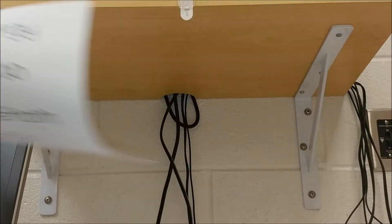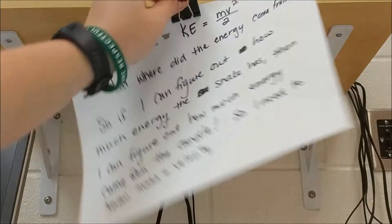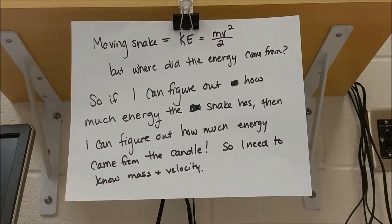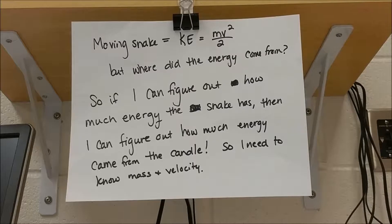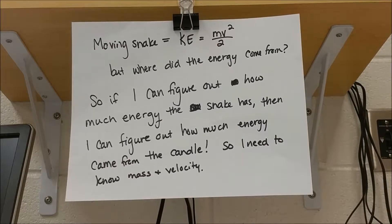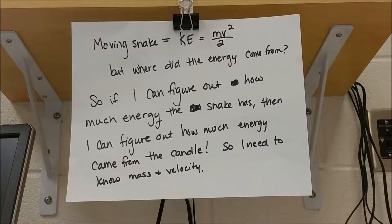To answer that question, we need to know what energy is. If a snake is moving, it must have kinetic energy, and we can calculate kinetic energy based on mass and velocity using the equation KE = mv²/2. We know that energy came from the candle, so if we can figure out how much kinetic energy the snake has by changing the mass and observing how velocity changes, we can figure out how much energy came from that candle.